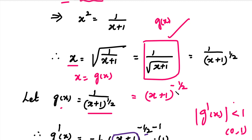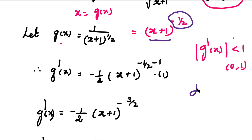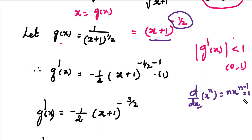We use the power rule formula: d/dx of x^n = n times x^(n-1). We apply this here. The power is n = -1/2, and the bracket contains (x+1). So the differential of x^n is n into x^(n-1). Since the differential of (x+1) with respect to x is 1, the constant drops out.